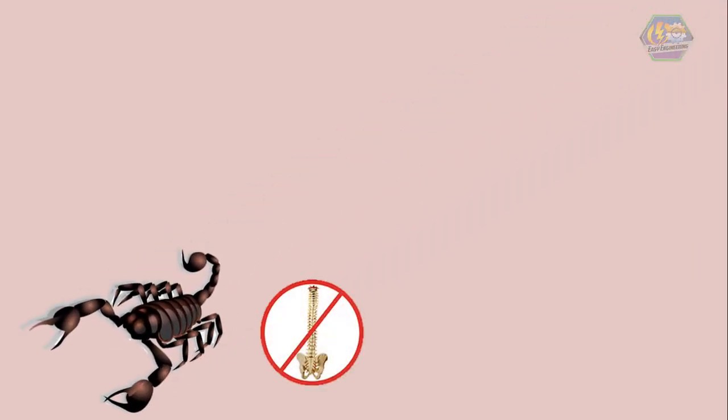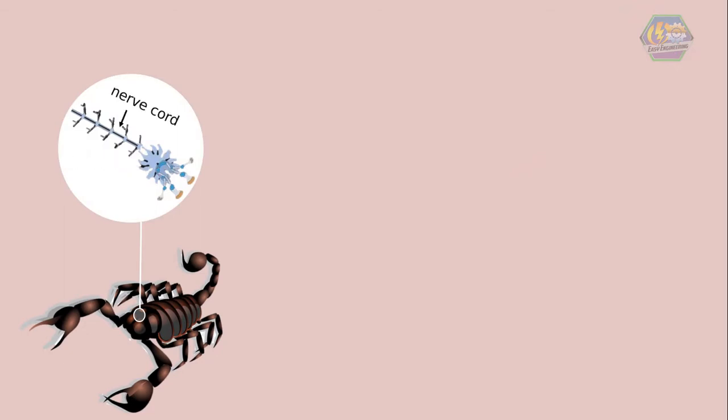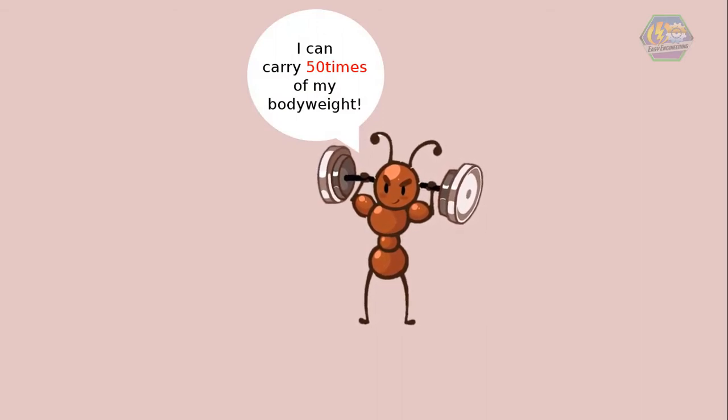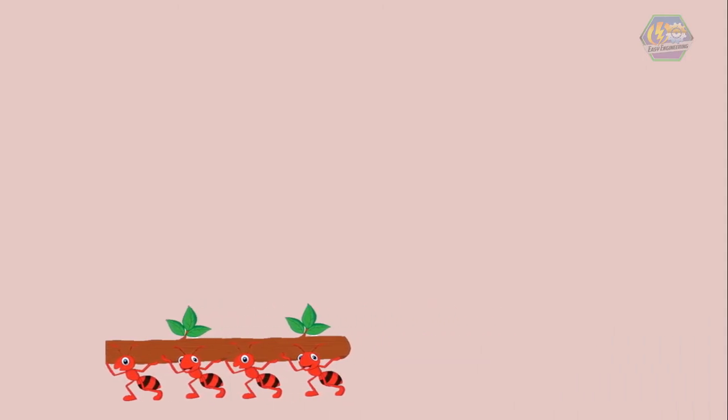Arthropods are invertebrates, which means they do not have a backbone. They have a brain and a long nerve cord and sense structures that allow them to sense their surroundings. Fun fact learners, did you know that ants are the strongest creature on earth? Well, based on their size, a single ant can carry 50 times its own body weight, and they'll even work together to move bigger objects as a group. Imagine 50 times!